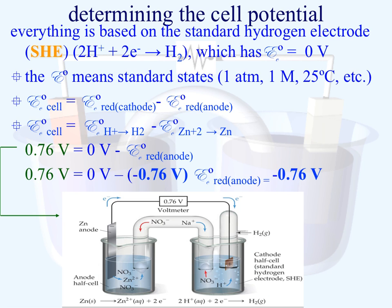The standard hydrogen electrode is the reference point — it's known as the SHE. Basically, the cell potential associated with this reduction process is equal to zero volts, and all the other tabulated data that we have are referenced against this specific electrode setup.